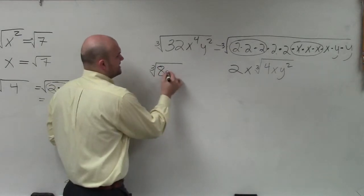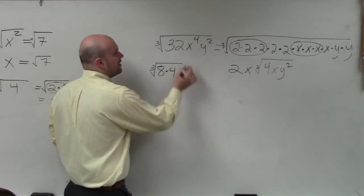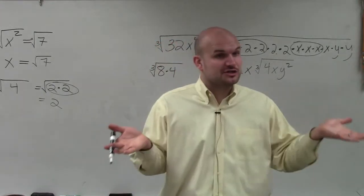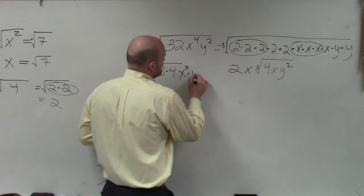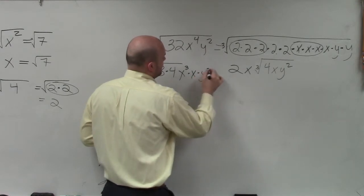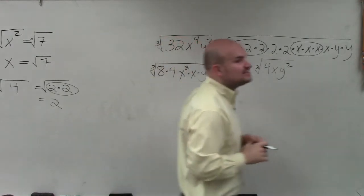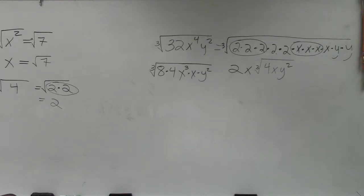So if I wrote this as 8 times 4, then I know I can only take the cube root of x cubed. So what I'm going to do is I'm going to rewrite this as x cubed times x times y squared. And the reason why I wrote it like that, ladies and gentlemen, is because I know how to take the cube root of x cubed. The cube root of x cubed is just x.